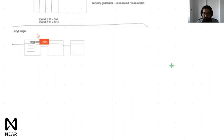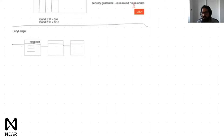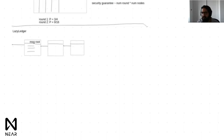Lazy ledger doesn't execute the messages — it just orders them. To check if a block is valid, you no longer need to execute the block; you only need to make sure the block data is available. A light node essentially has almost the same security guarantees as a full node. Light nodes do random sampling, and the fraud proof for incorrect erasure coding is stateless — unlike a state transition fraud proof. Someone checking one full block can construct a fraud proof for that block without needing any previous blocks.